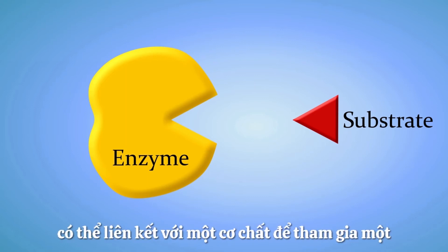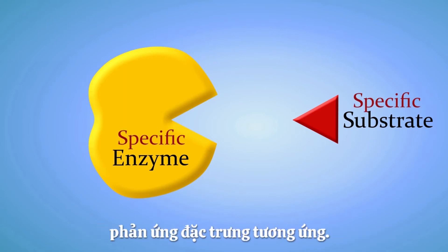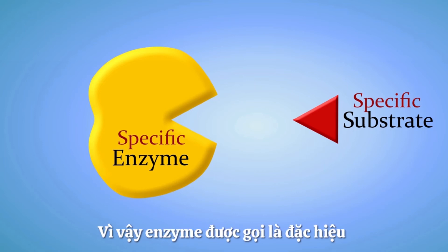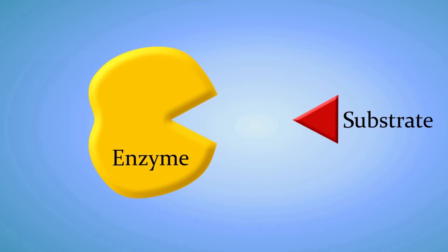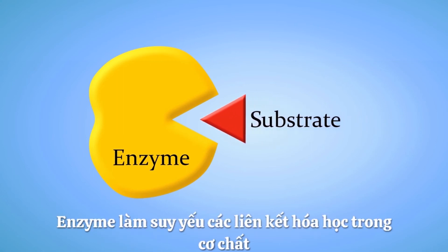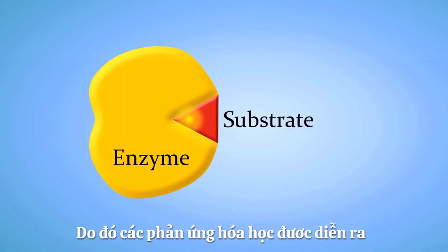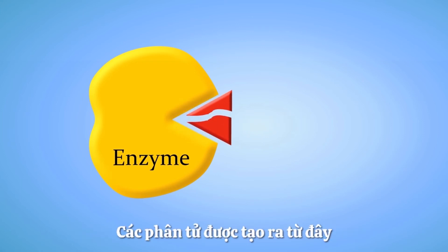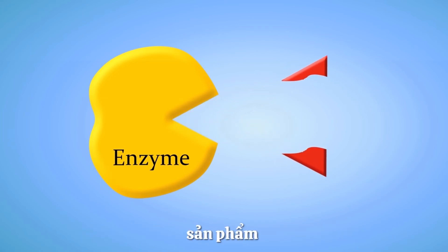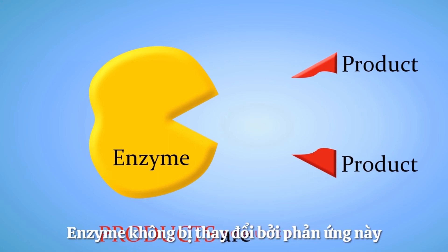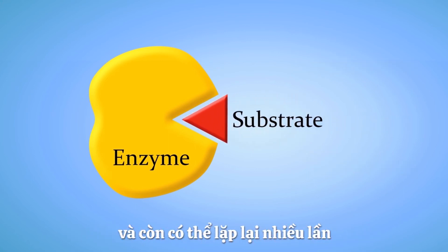Each enzyme can only work on specific substrates to do specific chemical reactions, so we say that enzymes are specific. When the substrate enters the active site, the enzyme weakens the chemical bonds in the substrate, causing the chemical reaction to happen. The molecules produced by the reaction are called products. The enzyme is not altered by this reaction and can be used again and again.